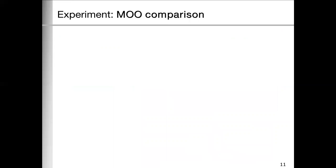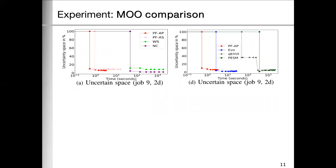Now we come to the experiment part. First, we compare our algorithm with other MO algorithms. This result is for one job. We can see that we have our PF-AP algorithm. We also have the constraint normal, weight-sum, evolutionary, and the two versions of the BSN based MO algorithms. The X axis is the time-elapsed. The Y axis is the uncertainty space, starting from 100%. As we can see, PF-AP is the first to start reducing the uncertainty space.